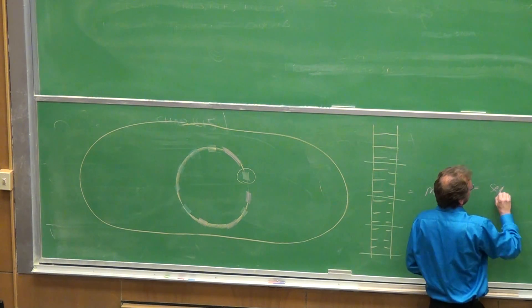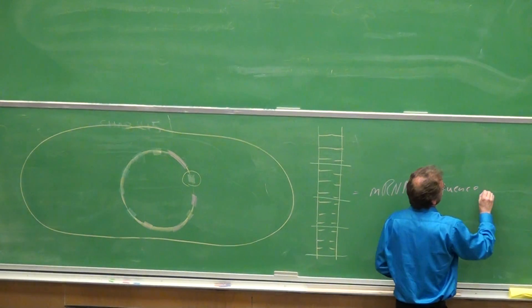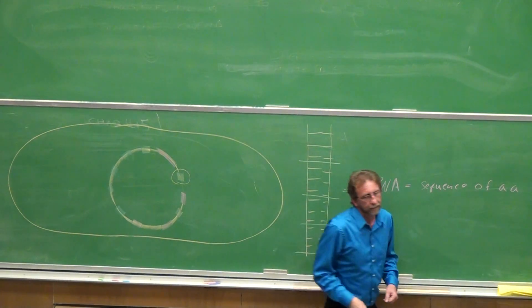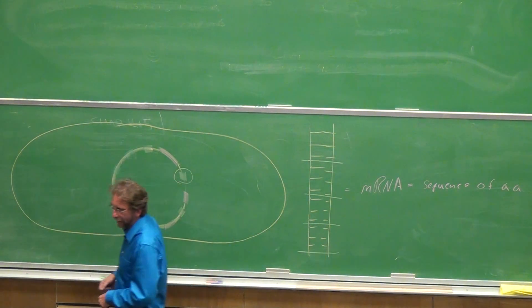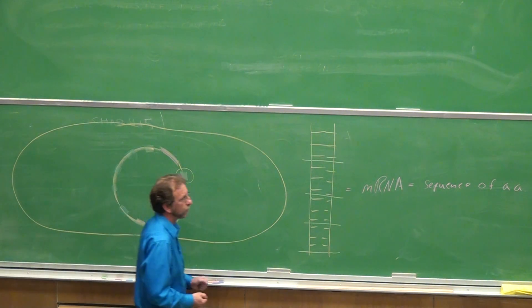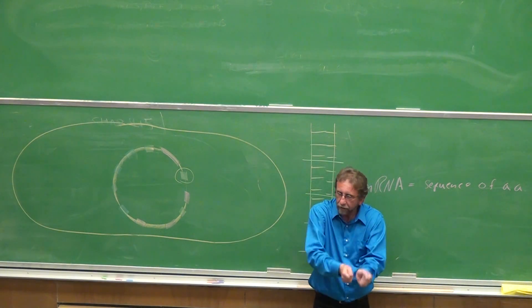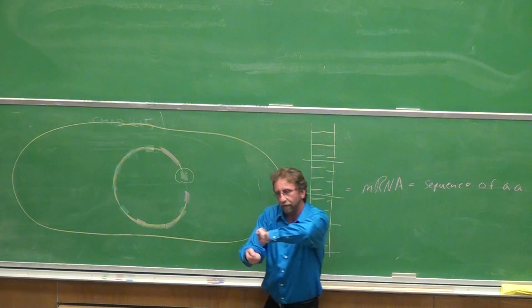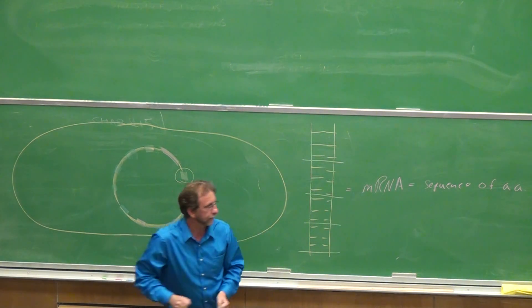These messenger RNAs then convert this DNA sequence into a sequence of amino acids and as that sequence of amino acids is being built, it will fold in on itself based on the sequence of amino acids. Depending on where they go, they'll fold and form bonds.